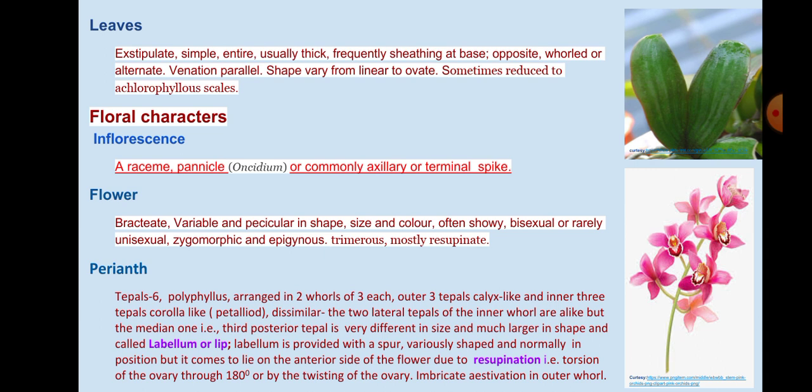Resupinate. Perianth polyphyllous, arranged in two whorls of three each. The outer three tepals are sepal-like and the inner three are petal-like but dissimilar. The two lateral tepals of the inner whorl are alike, but the median one — the third posterior tepal — is very different in size and much larger in shape, called the labellum or lip. The labellum is variously shaped and normally in position but comes to lie on the anterior side of the flower due to resupination, i.e., torsion of the ovary through 180 degrees or by the twisting of the ovary. Imbricate aestivation in the outer whorl.